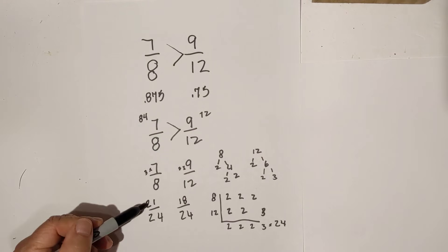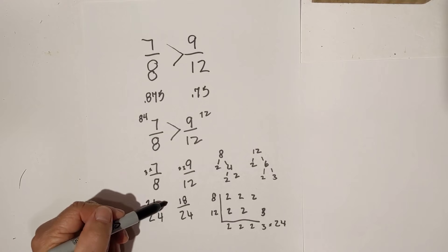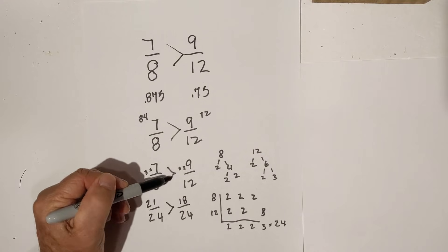And once again, 21 24ths is larger than 18 24ths. So, there we go.